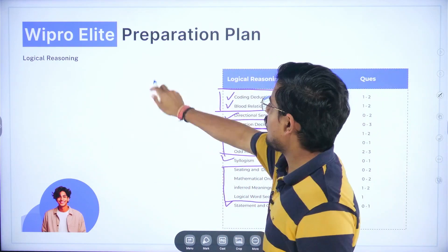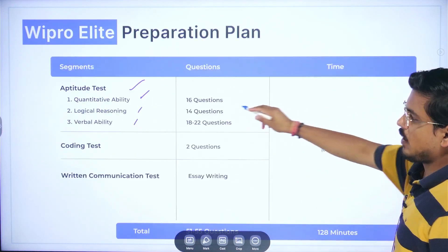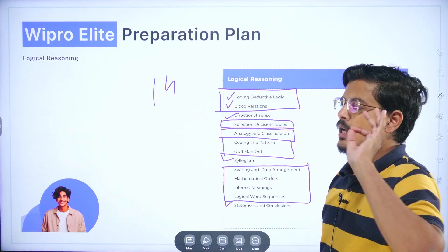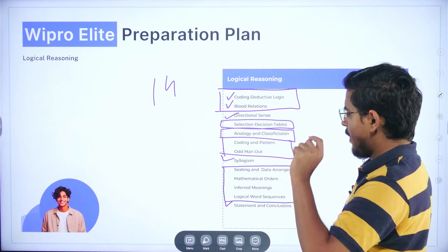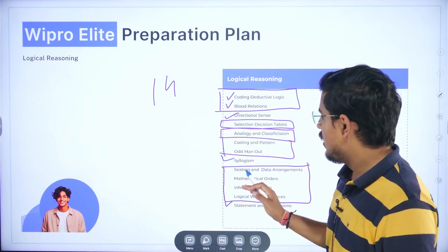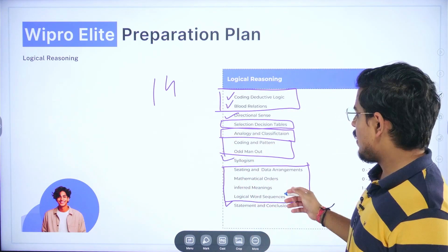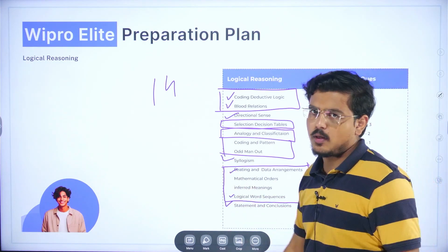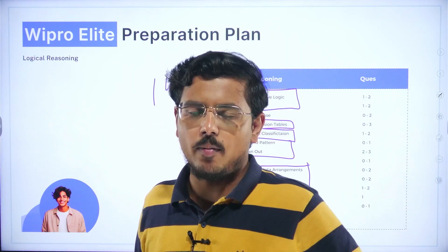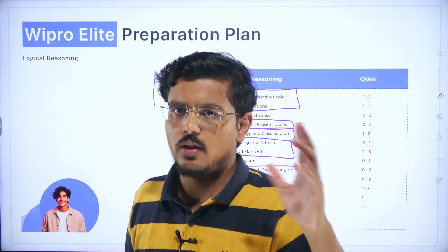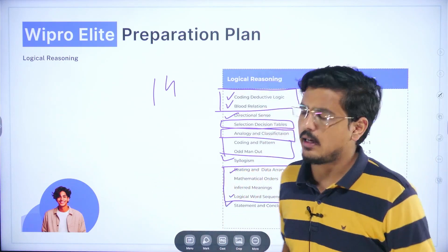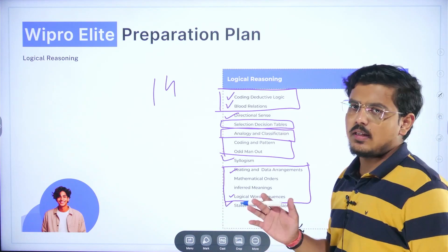In logical reasoning, you have 14 questions. It is always advisable — never straight away enter into coding or deductive logic questions first when you appear in the exam. The best thing to do is either spend your time in odd man out questions or analogy and classification questions, or spend your time in logical word sequences and seating and data arrangements. Seating and data arrangement questions generally have one premise and then five questions associated with them, so if you solve that whole premise, you can easily solve those five questions in just maybe one minute. However, generally in Wipro, it is not the pattern that they give five questions on seating and data arrangements.